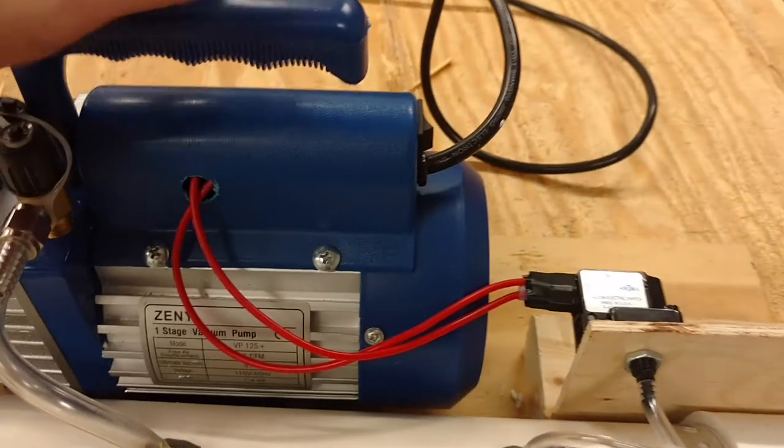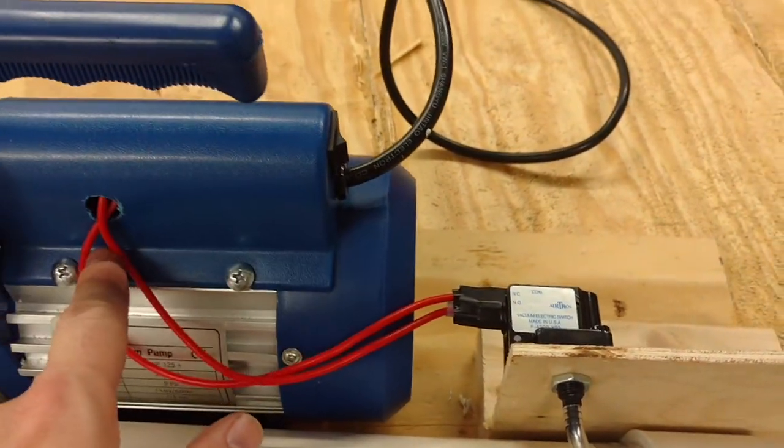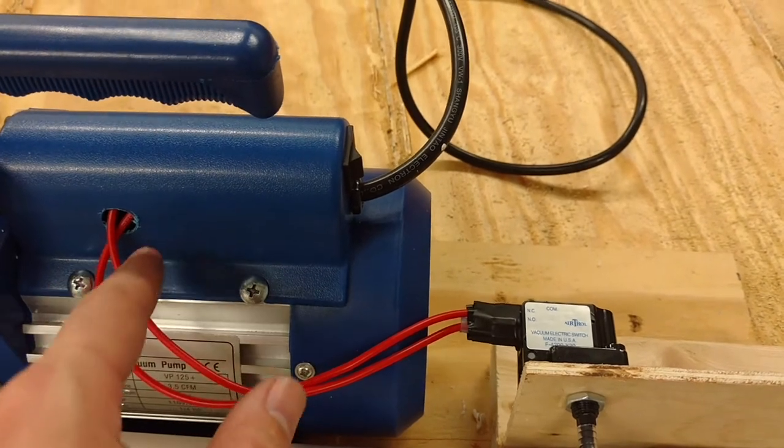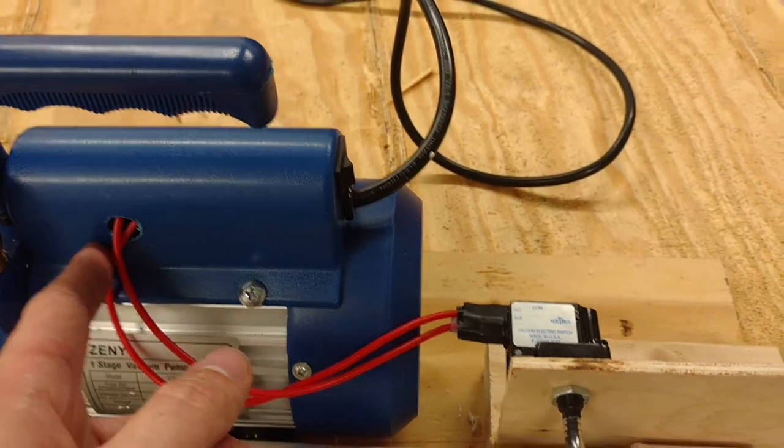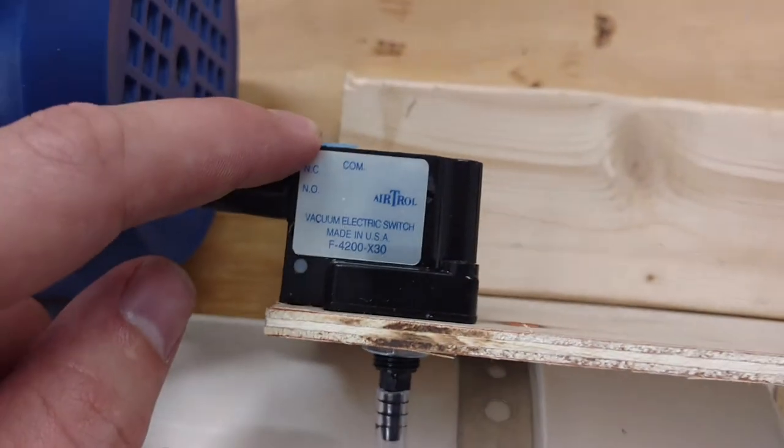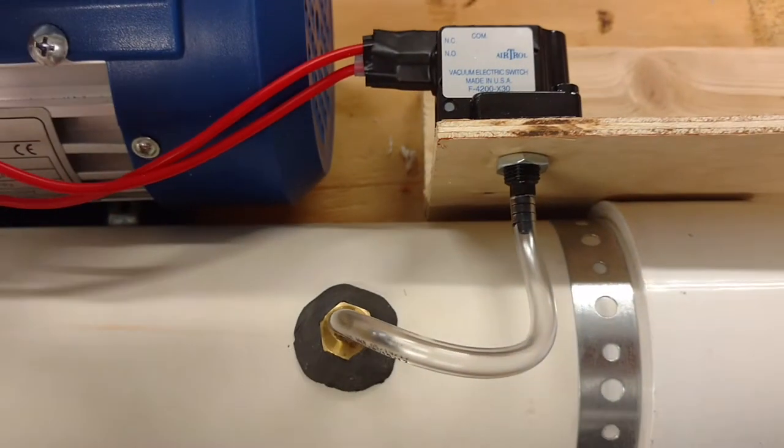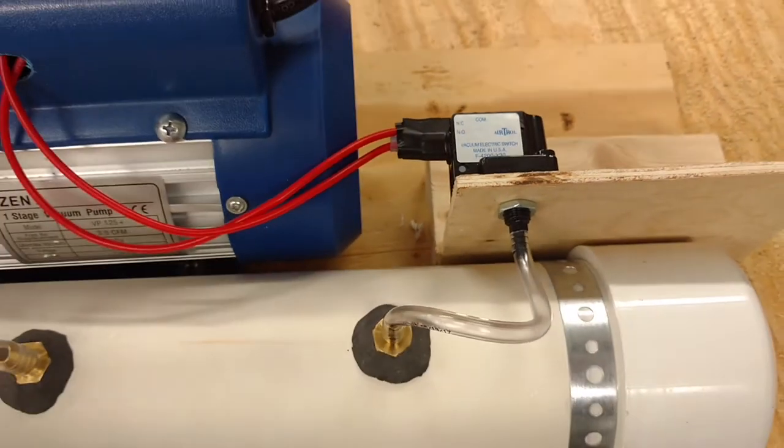To wire this you just pop this cover off and there's a wire that goes to a circuit breaker. You disconnect the one that goes to the line of the circuit breaker from the switch itself over to the common on the vacuum switch. And if it's a normally closed contact you just run that back to the circuit breaker line. So pretty simple, just two wires.